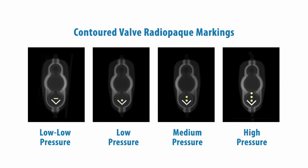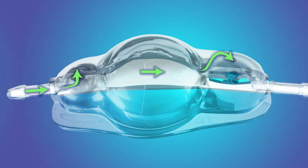The dot codes indicate valve pressure level and the arrow indicates direction of flow.